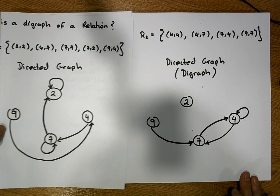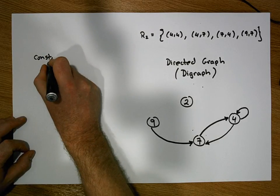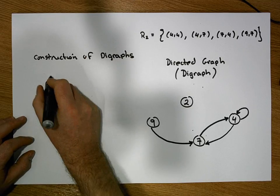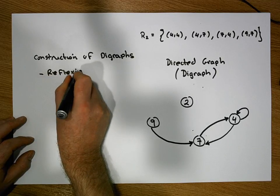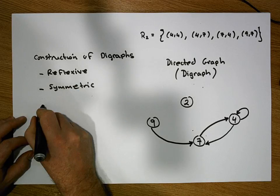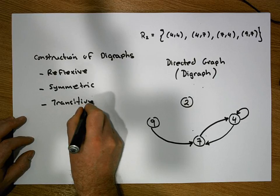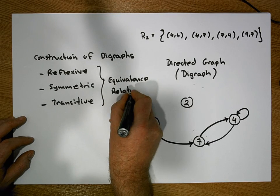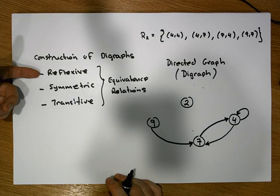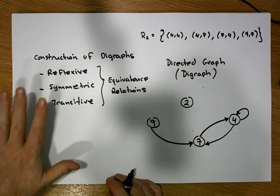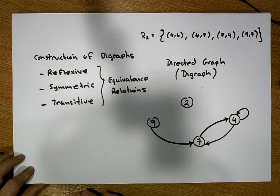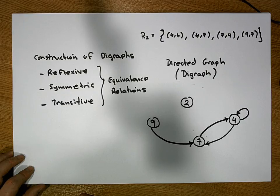The next set of videos are going to look at the construction of digraphs for relations that are reflexive, symmetric, and transitive, and when a relation is all three we say that the relation is an equivalence relation. At the end of this video there will be a link to that video. Digraphs are a great way to examine whether a relation is reflexive, symmetric, or transitive. My name is Jonathan Lambert with the Mathematics Development and Support Service, and I hope this video was informative. Thank you.